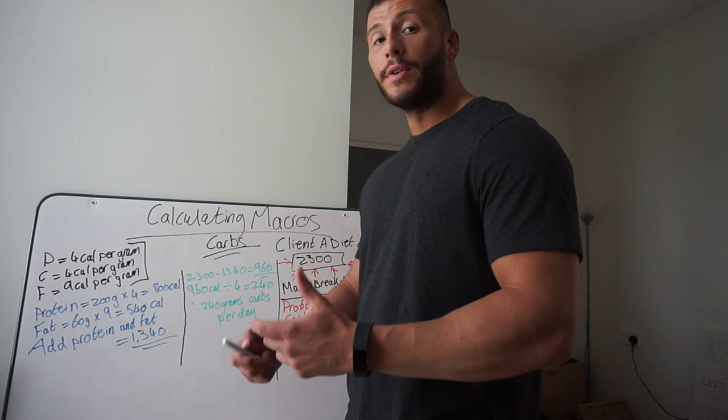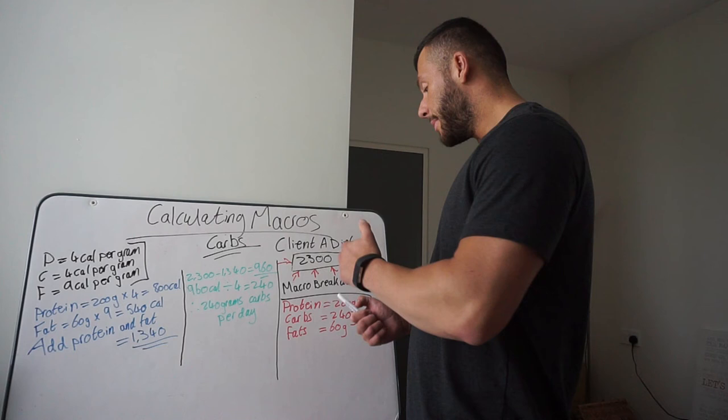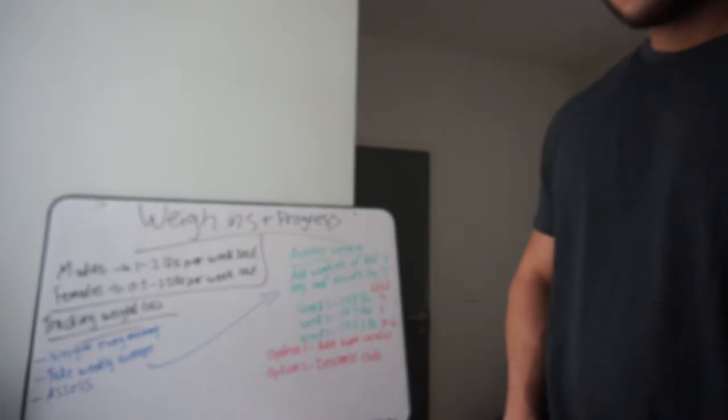Now remember, four calories per gram of carbs. Divide 960 by four, that gives you 240 grams of carbs per day. Okay, so our macro breakdown for Client A: the protein is going to be 200 grams of protein per day, their carbohydrates is going to be 240 grams per day, and their fat is going to be 60 grams per day. So now we're getting somewhere.